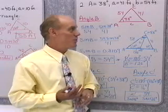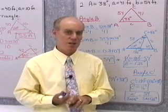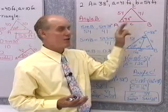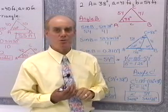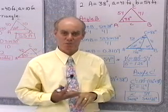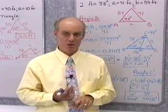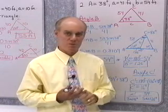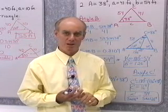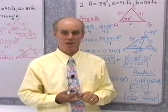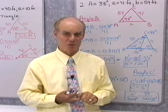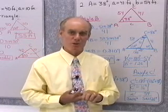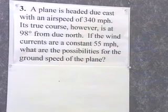When you have the Law of Sines in the ambiguous case — given two sides and an angle not included between them — one of three things can happen: either no triangle fits the description, or two triangles fit the description like in this problem, or in some cases just one triangle fits. Now let's go work a couple of word problems.